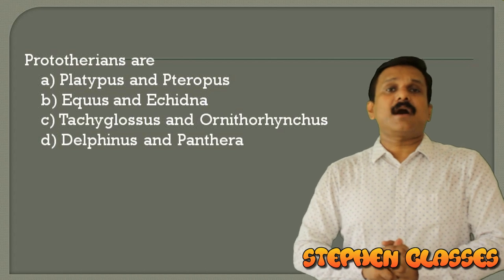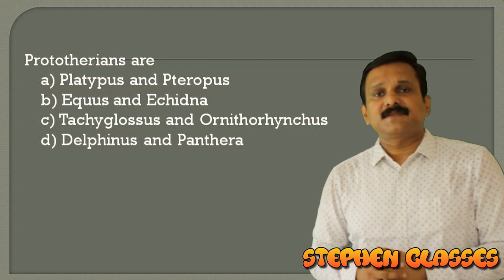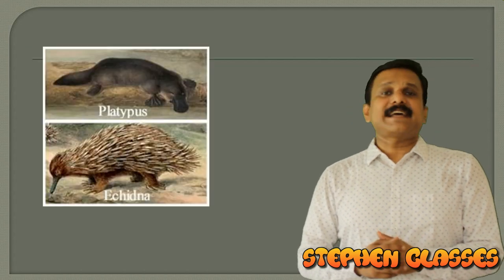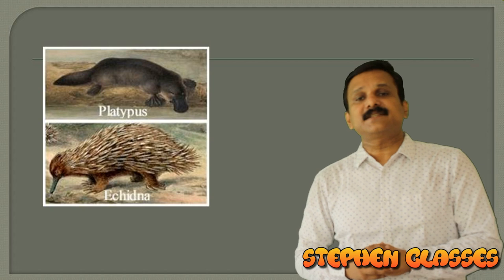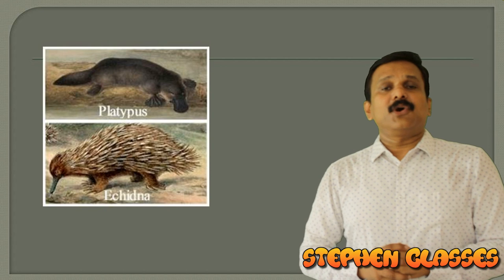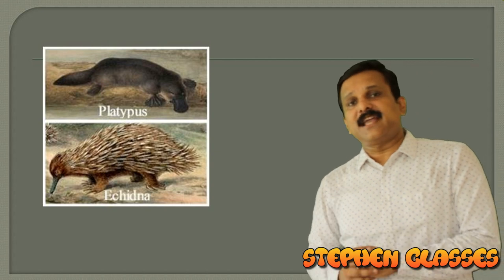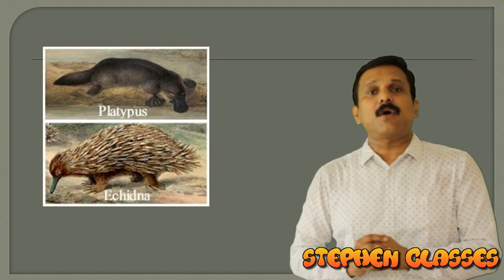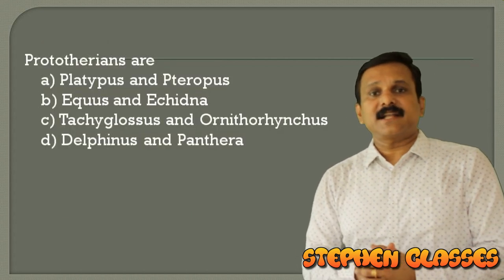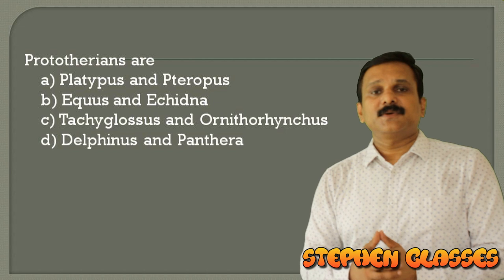Next question on Protheria: mammals are classified into oviparous and viviparous groups. The Monotremata order contains oviparous animals like platypus (Ornithorhynchus) and echidna (Tachyglossus). Other groups — Metatheria (pouched mammals) and Eutheria (placental mammals) — are viviparous. The correct answer for prototherians is option C: Tachyglossus and Ornithorhynchus.